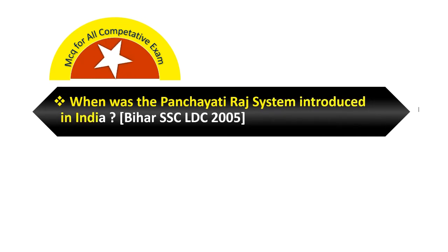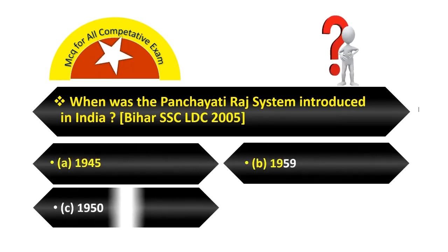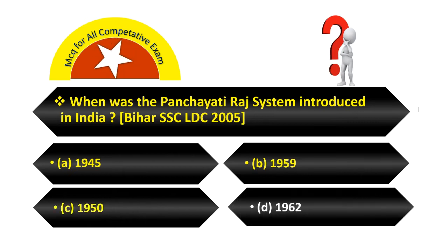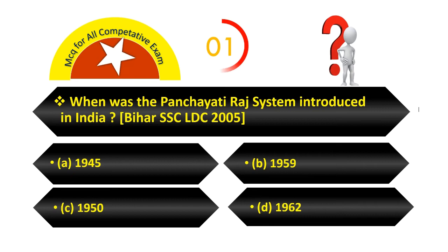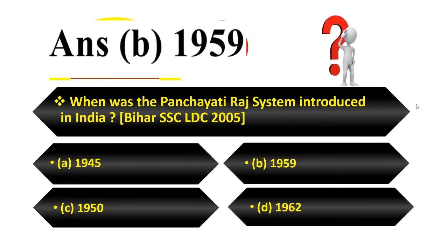When was the Panchayati Raj system introduced in India? Option A, 1945. Option B, 1959. Option C, 1950. Option D, 1962. Your answer is 1959.